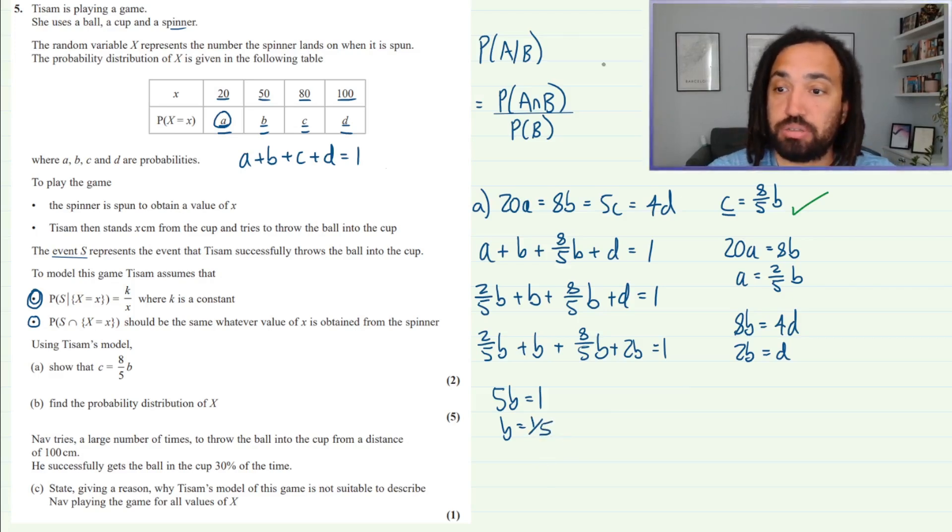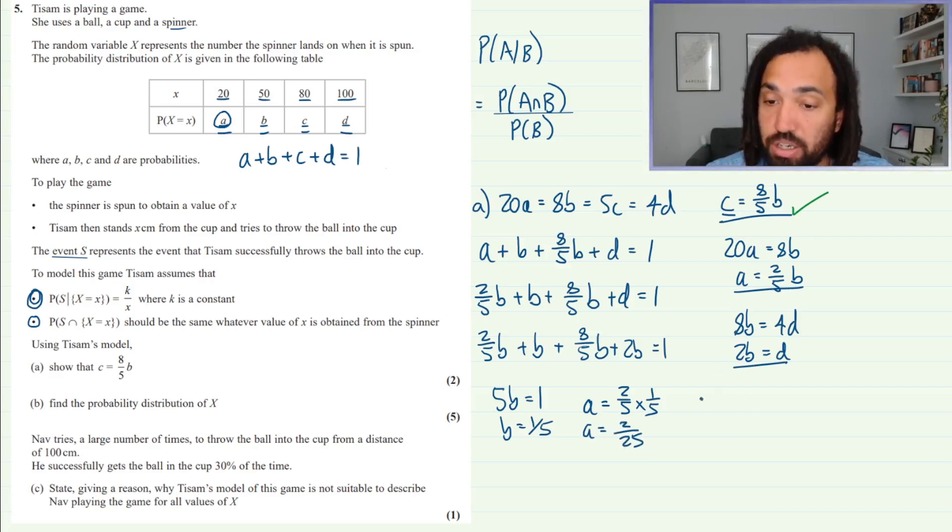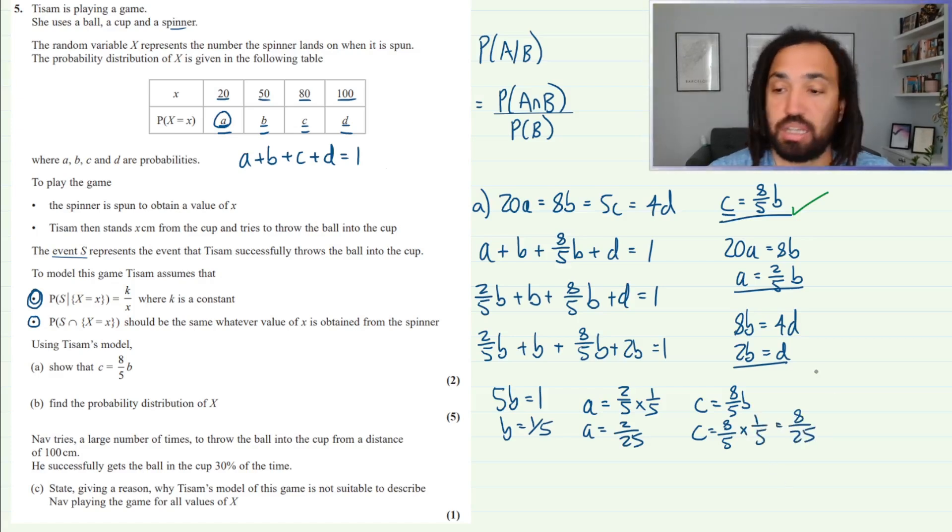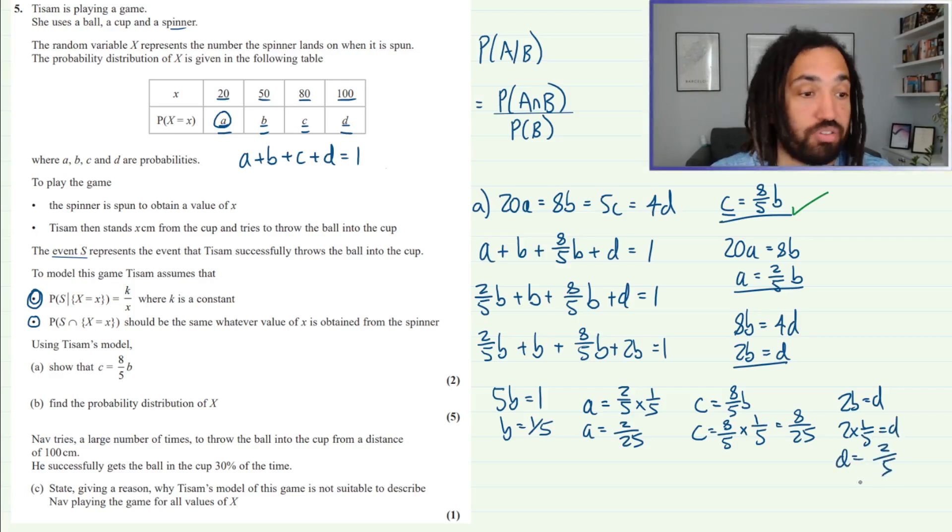Okay great, and now we can just use these equations we have on the side here. A is 2 fifths times B which is 1 fifth, so A is equal to 2 over 25. And we know that C is equal to 8 fifths B, so C is equal to 8 fifths and B is 1 fifth, so that makes 8 over 25. And then we also know that 2B is equal to D, so D is equal to 2 fifths. Perfect.